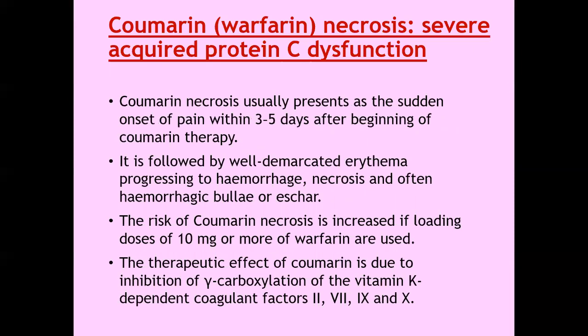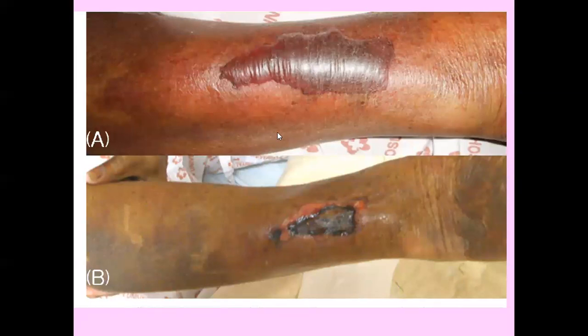Coumarin or warfarin necrosis represents severe acquired protein C dysfunction. It usually presents as sudden onset of pain within 3 to 5 days of beginning coumarin therapy, followed by well-demarcated erythema progressing to hemorrhagic necrosis and often hemorrhagic bullae or scar. The risk of coumarin necrosis is increased if a loading dose of 10 mg or more of warfarin is used. The therapeutic effect of coumarin is due to inhibition of gamma-carboxylation of vitamin K-dependent coagulation factors, including factors 2, 7, 9, and 10.